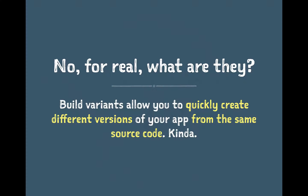Build variants in Android allow us to quickly create different versions of our application from the same source code — and the reason 'kind of' is the right phrasing is because that's kind of the truth. We can create different versions of our app from the same source code, but sometimes there are small changes needed inside the source code to get these different variants built.